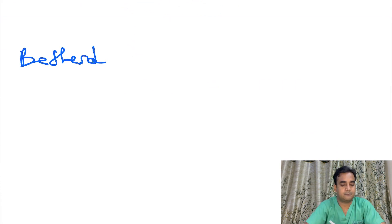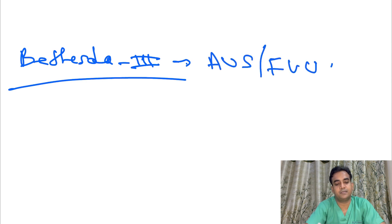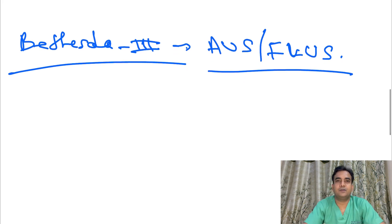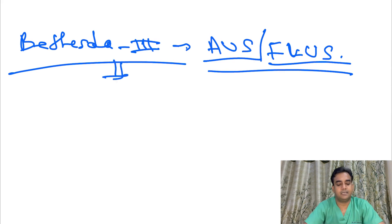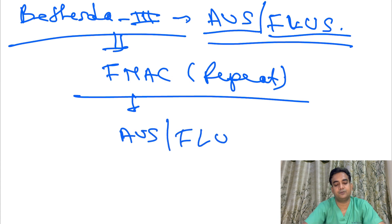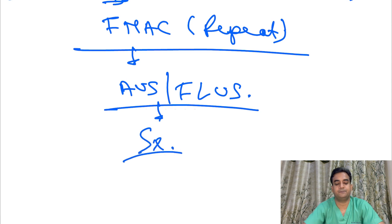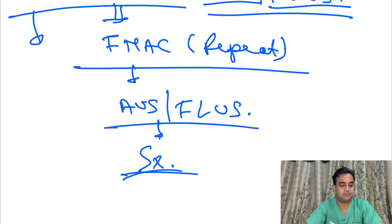Bethesda 3 is very interesting — it is AUS or FLUS. AUS is atypia of undetermined significance and FLUS is follicular lesion of undetermined significance. In AUS and FLUS, you need to repeat the FNAC. If it again comes back as AUS or FLUS, then you can go ahead and do surgery — that is hemithyroidectomy, or if the tumor involves both lobes, near-total thyroidectomy. The chance of malignancy in the final histopathological specimen for Bethesda 3 is 10 to 15 percent.